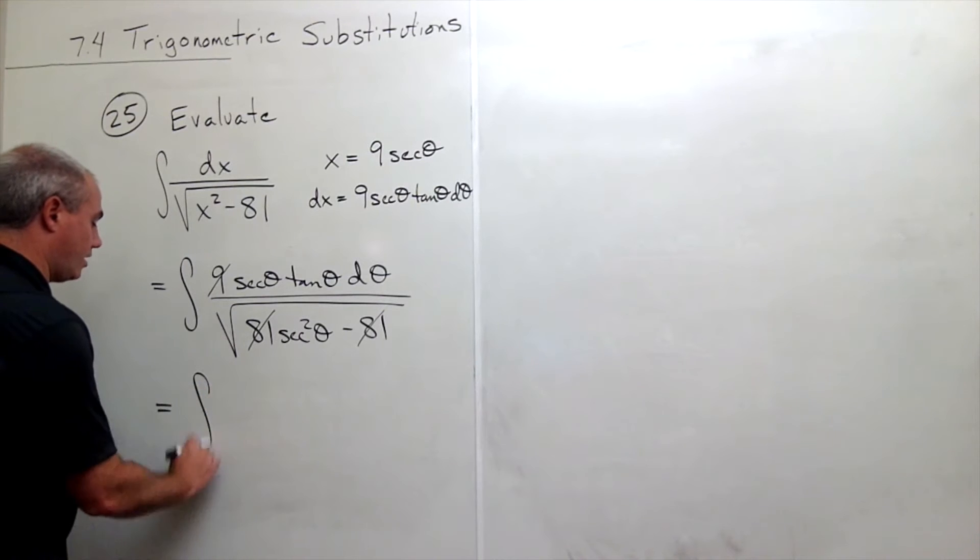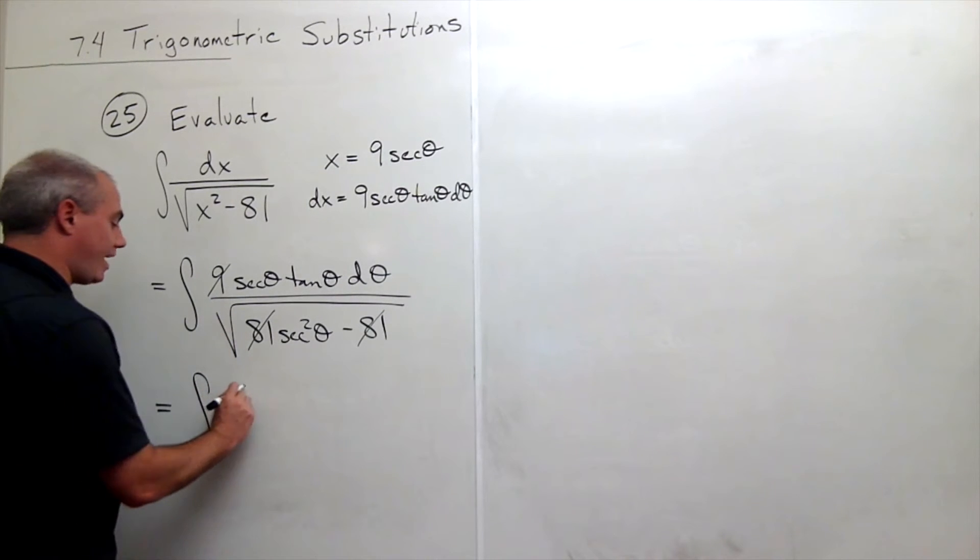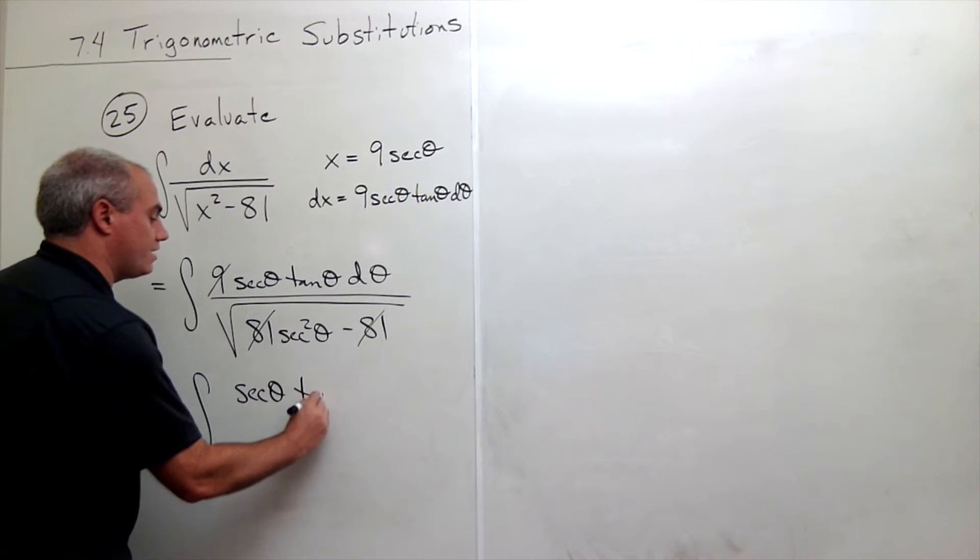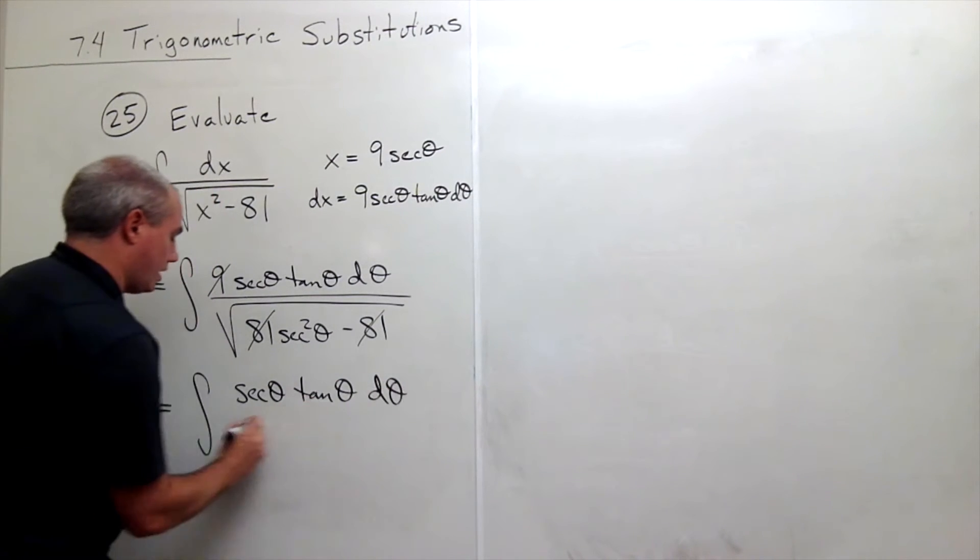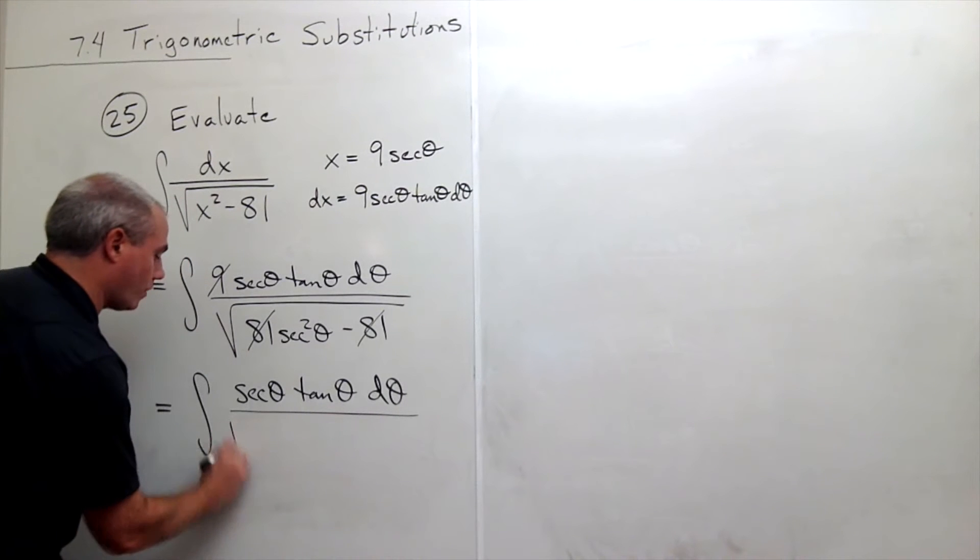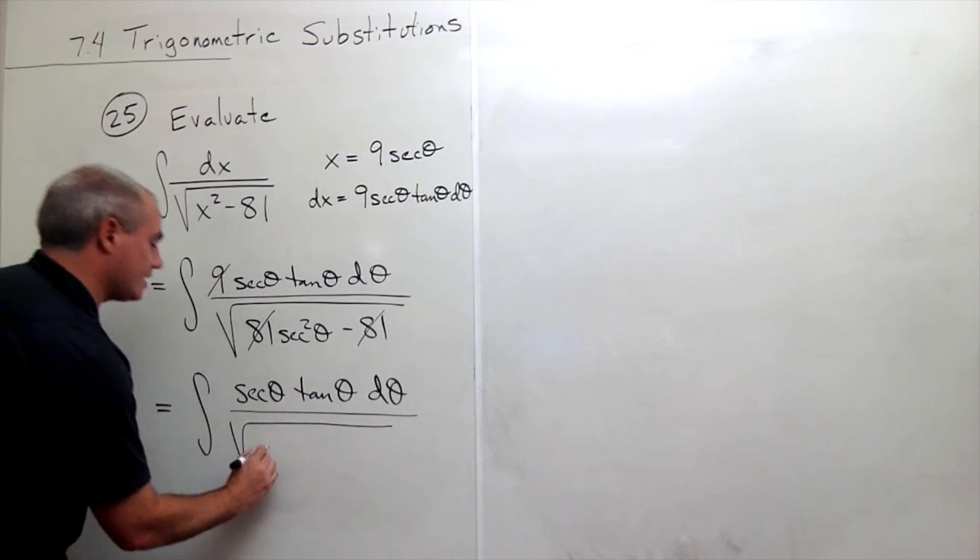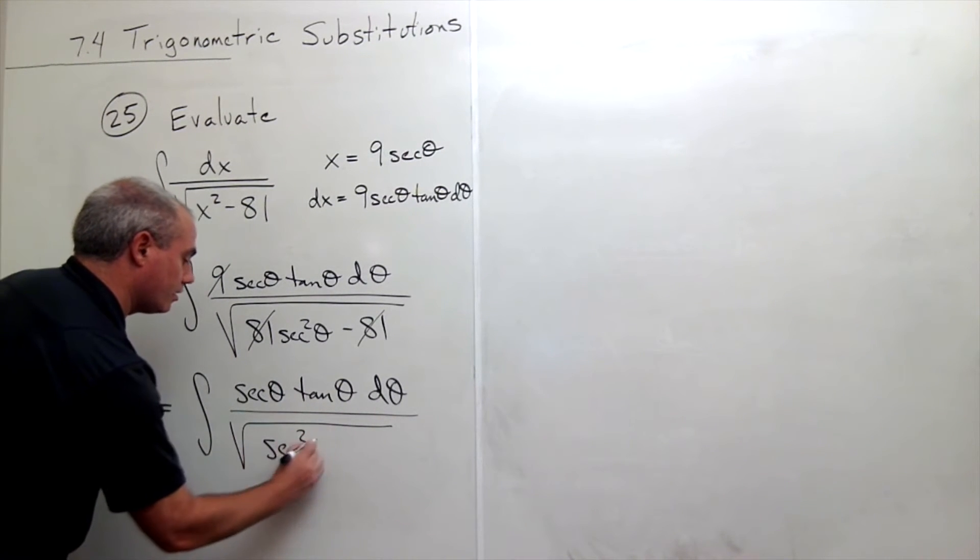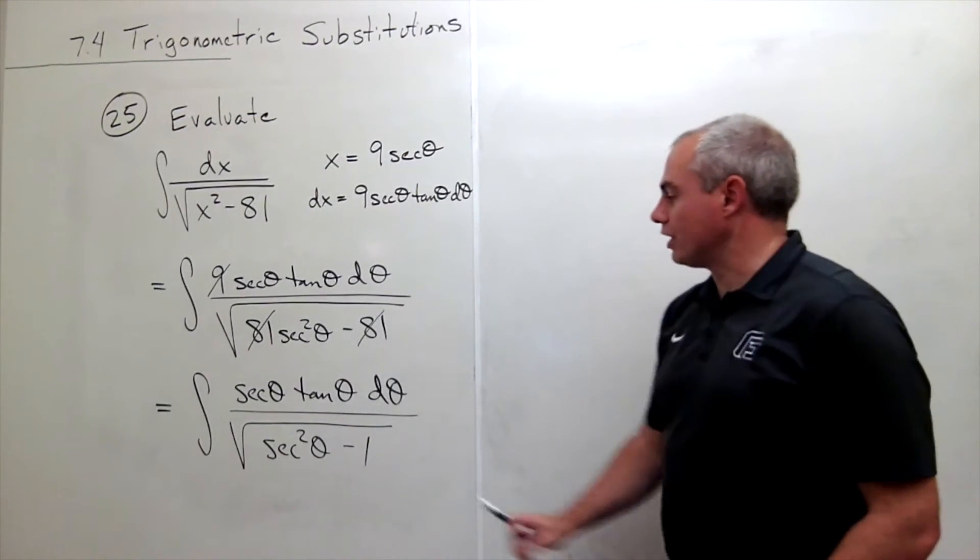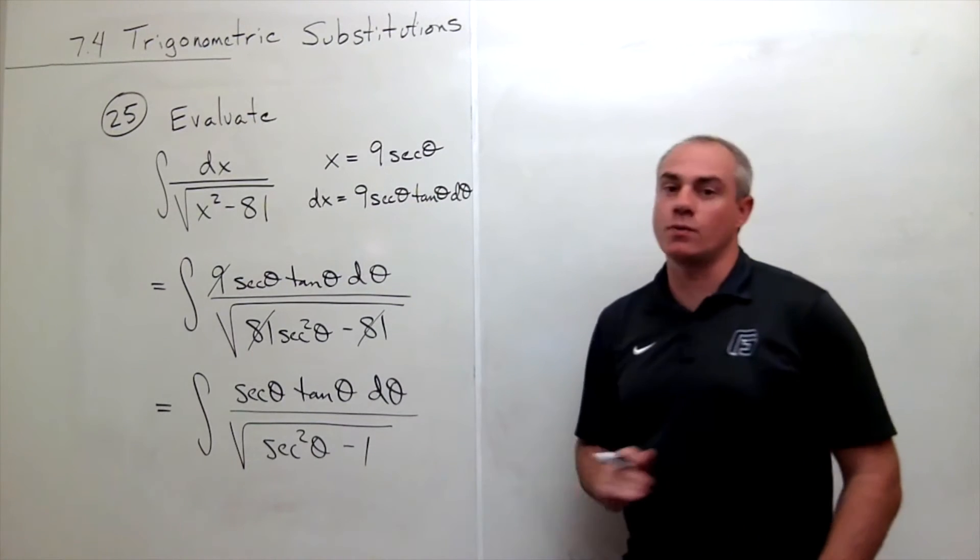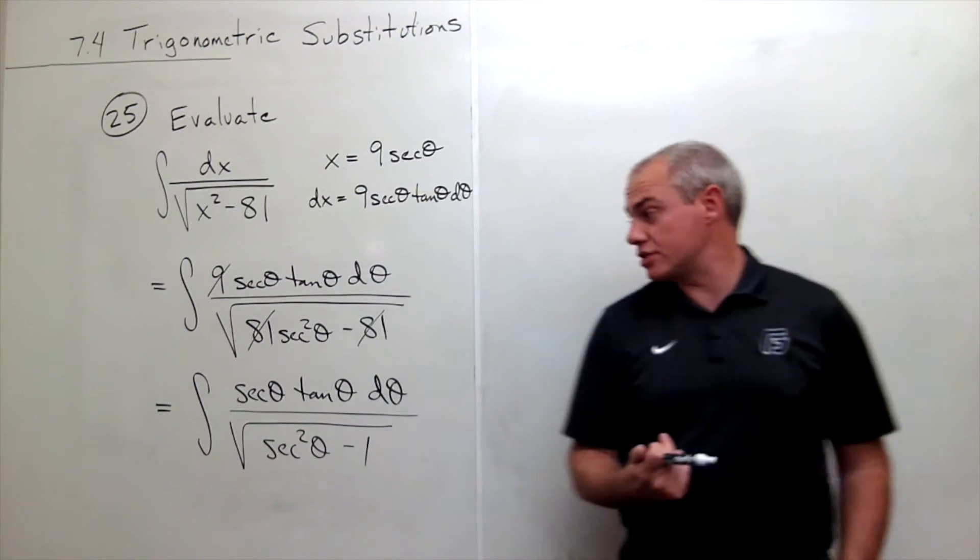This becomes the integral of secant theta tangent theta d theta over the square root of secant squared theta minus 1. We know that secant squared theta minus 1 equals tangent squared theta.